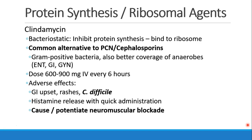Clindamycin is bacteriostatic, again binding to the ribosome to inhibit protein synthesis. It's a common alternative to penicillin or cephalosporins. It has good gram-positive coverage, but also good coverage of anaerobes, and we see it used a lot in ENT, GI procedures, or GYN. The dose is 600 to 900 milligrams IV every six hours.